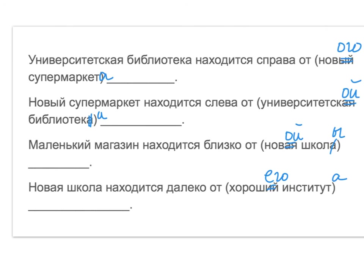Новый супермаркет находится слева от университетской библиотеки. Библиотека is, of course, feminine. And why did we choose И instead of Ы? Because of the spelling rule that we can't have Ы after К.